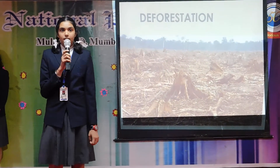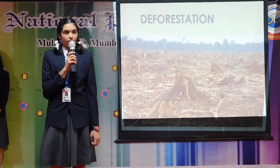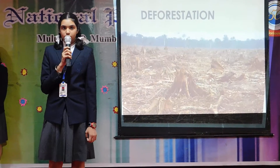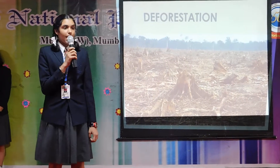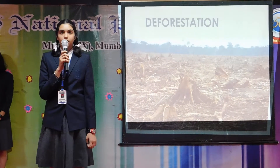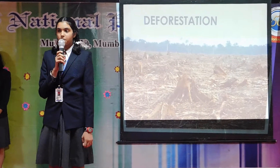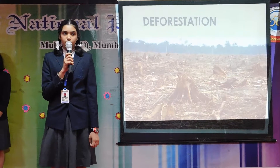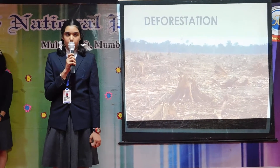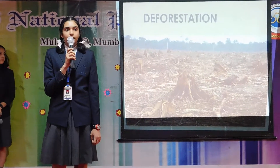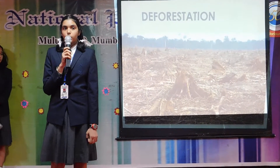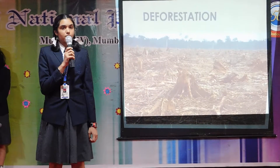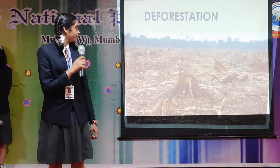Deforestation is the massive cutting down of trees. Trees affect the water cycle, as they transport large amounts of water into the earth's atmosphere through transpiration. Cutting down trees lessens the amount of water in the atmosphere, causing low rainfall.